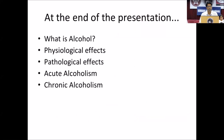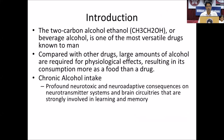Coming to introduction, alcohol — mainly we will talk about ethanol — it's a two-carbon alcohol. You can see the chemical formula. It is a beverage alcohol and one of the most versatile drugs. Why versatile? It acts on multiple receptors like dopamine receptors, acetylcholine receptors, opioid receptors, and cannabinoid receptors. Compared to other drugs, the quantity of alcohol needed is very high, so it results in consumption of alcohol more as a food than as a drug.